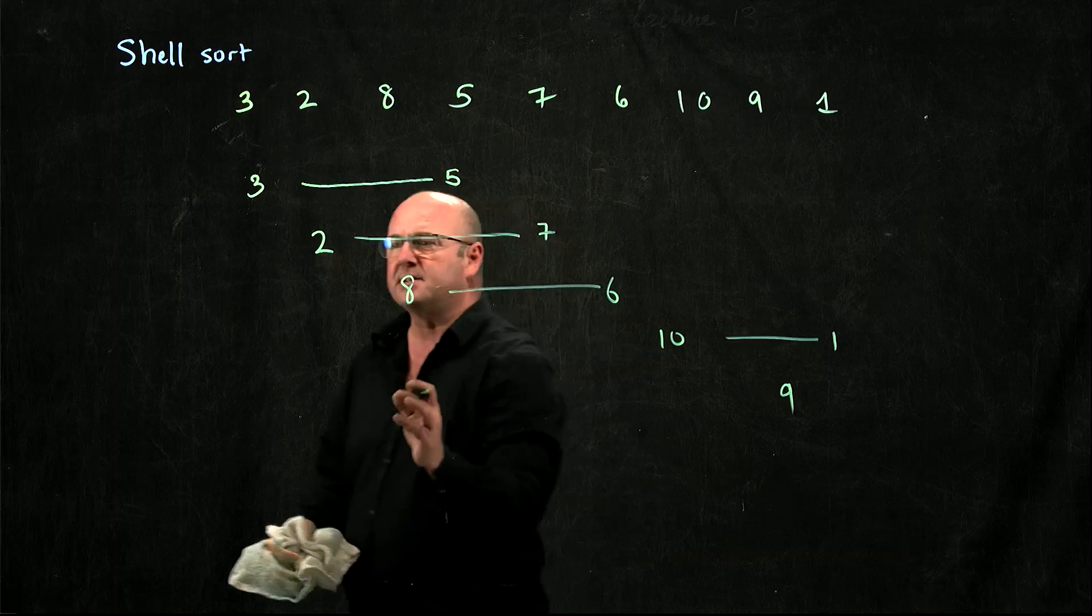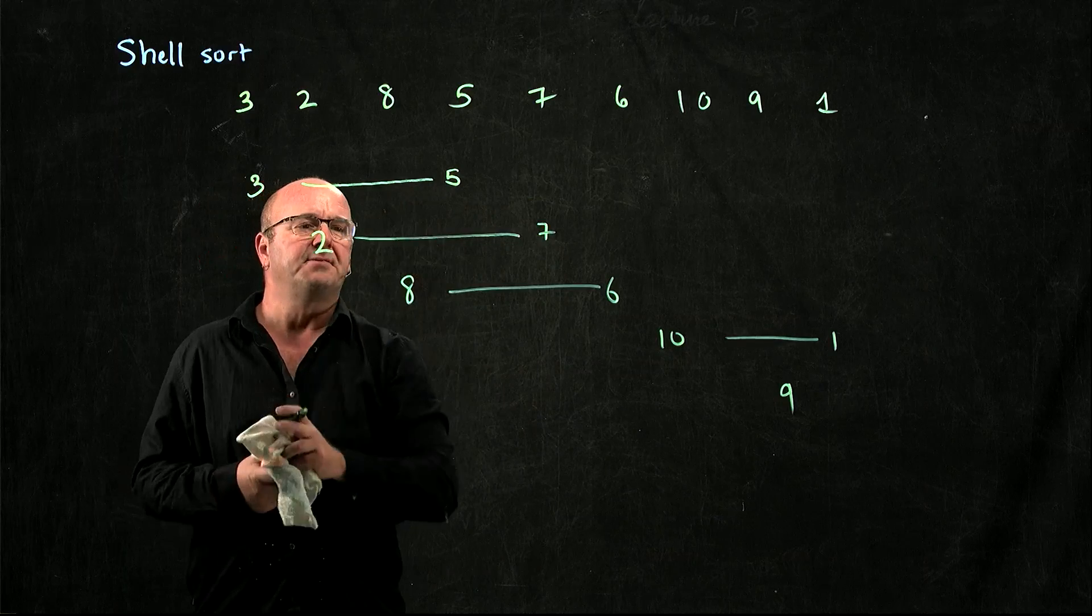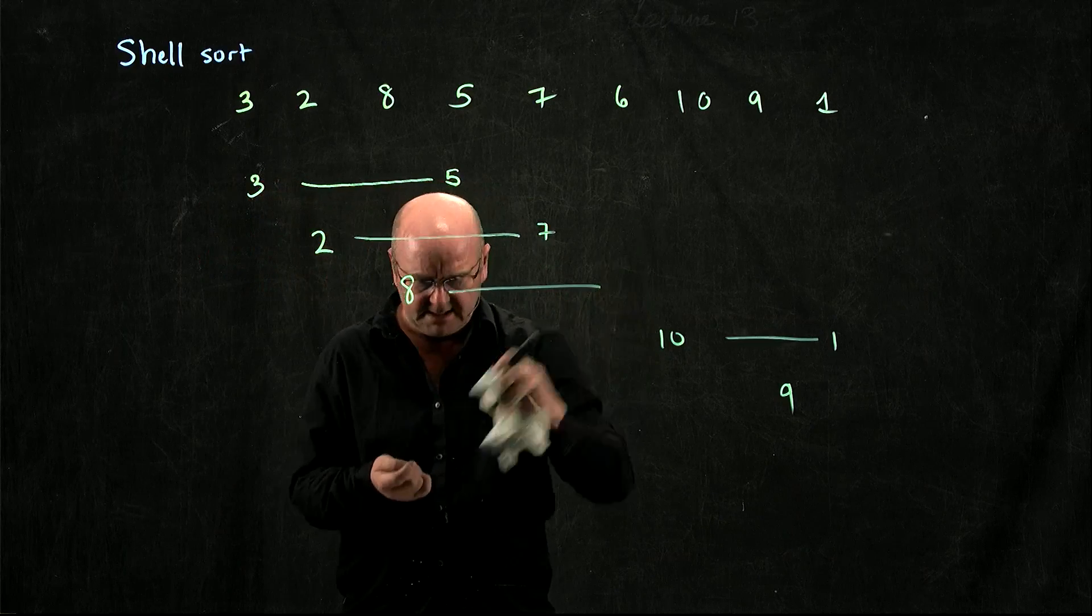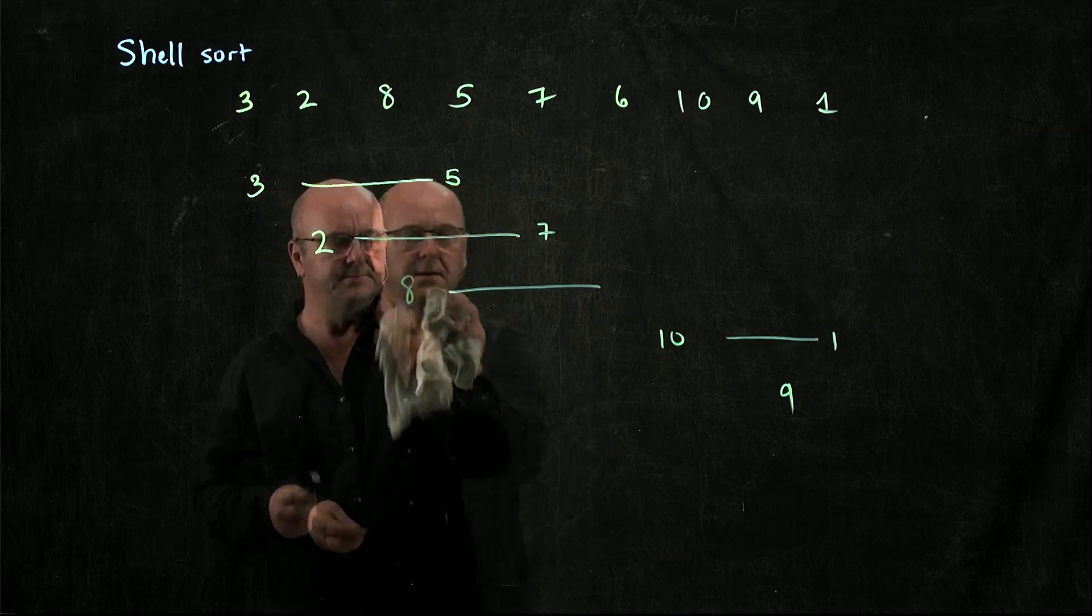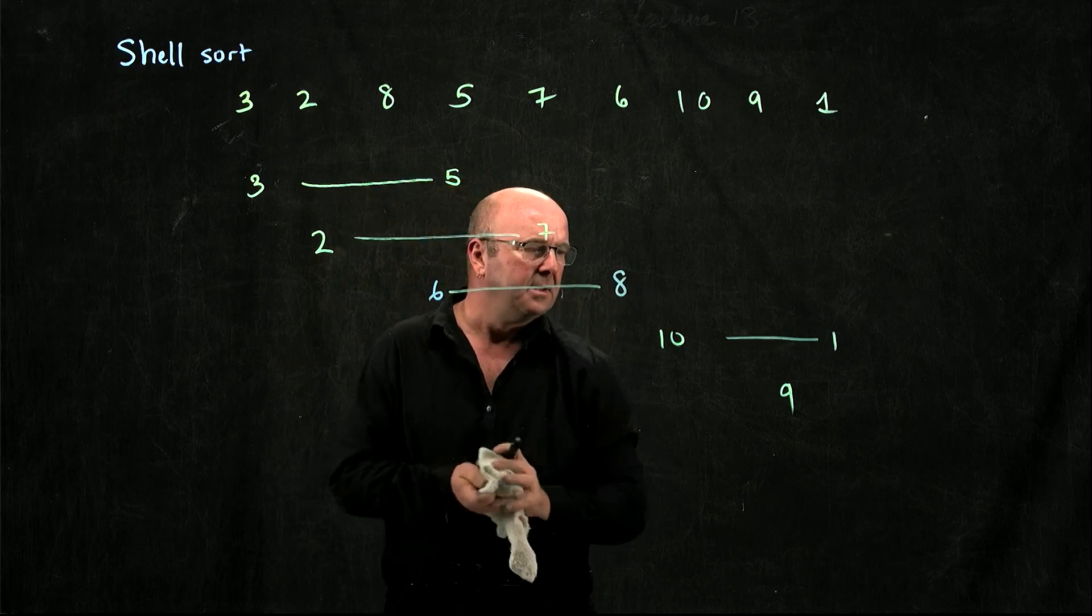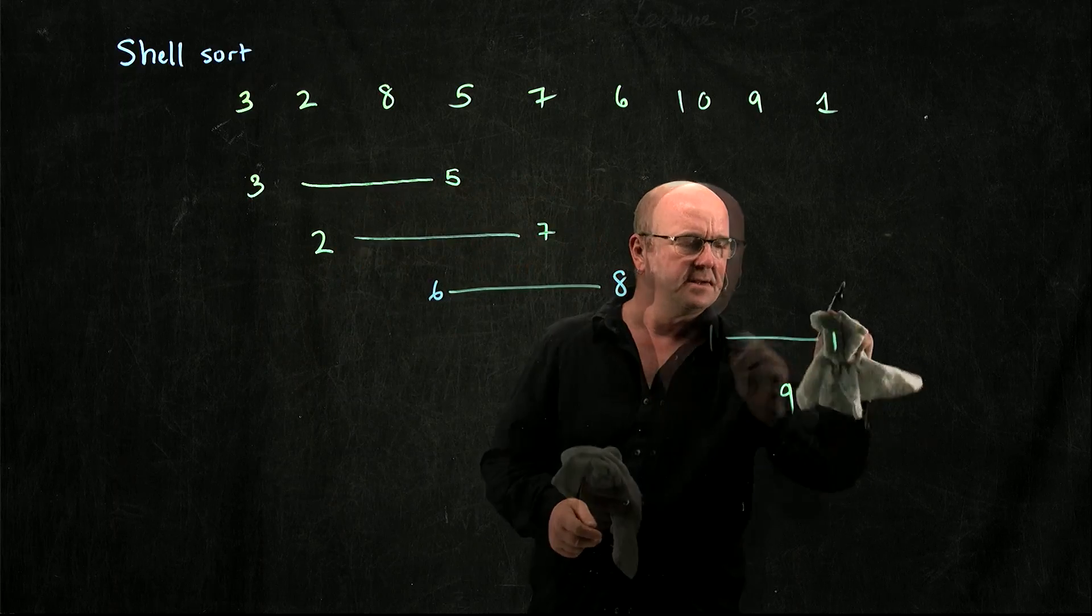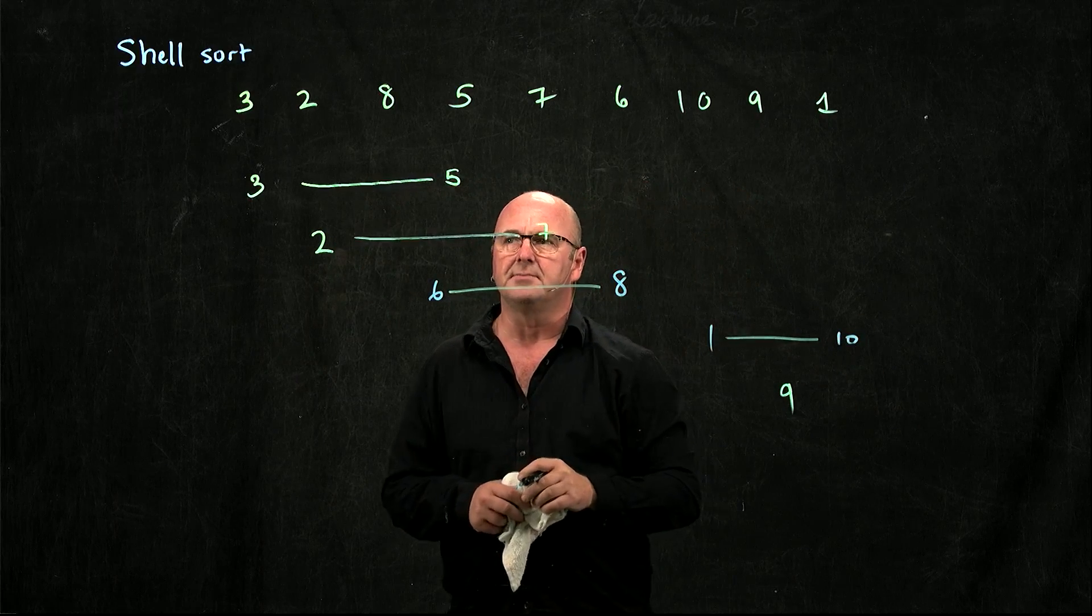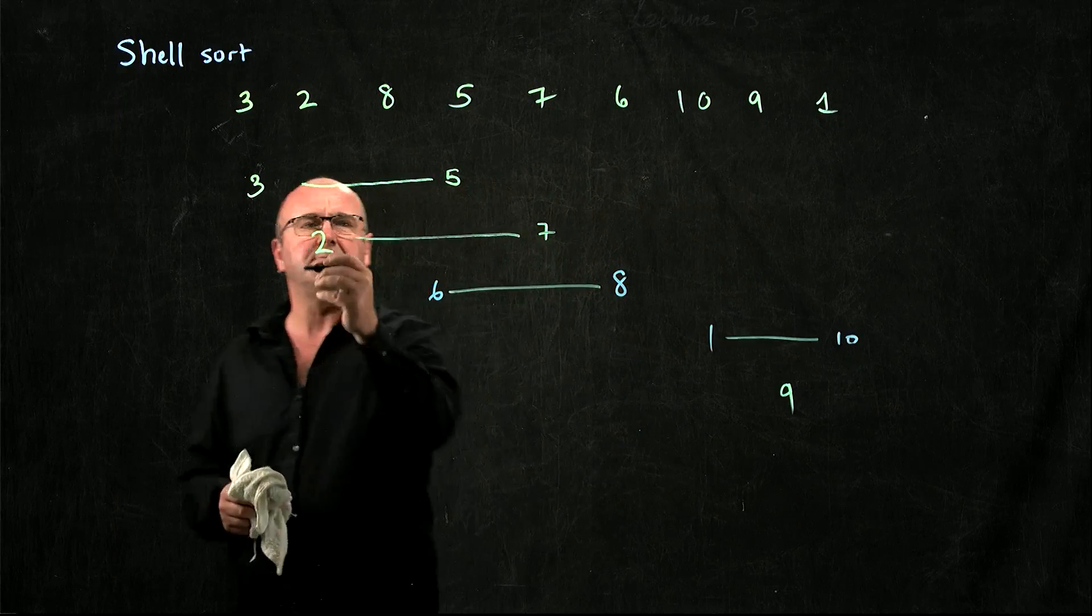I go through the same process. I don't have to swap the 3 and the 5. I don't have to swap the 2 and the 7. I swap the 6 and the 8, swap the 1 and the 10, and leave the 9 alone because it's a single element. Now I recreate my list. I put it back together.